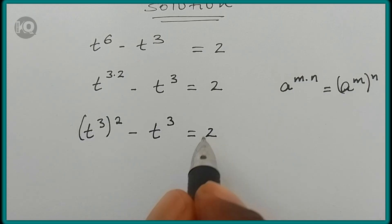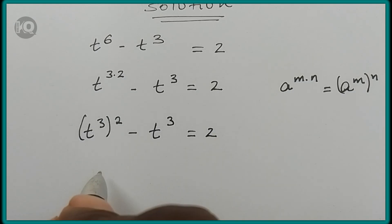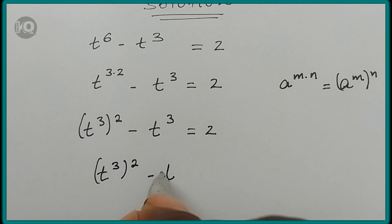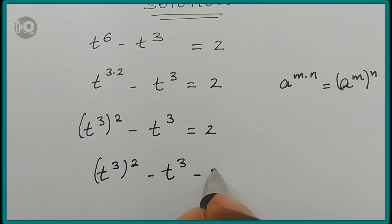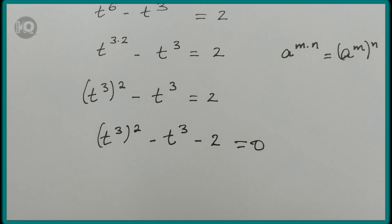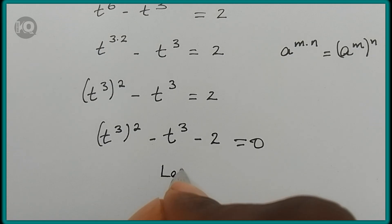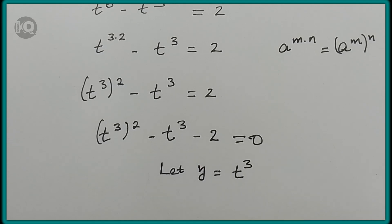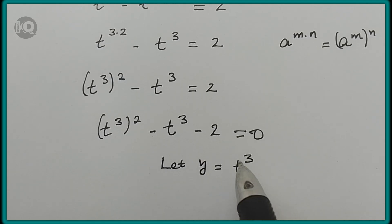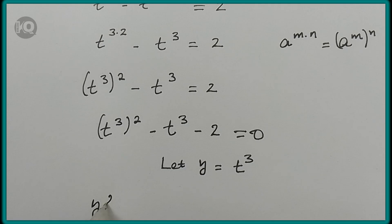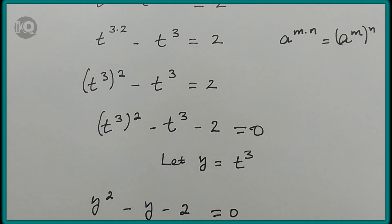Now let's bring the 2 to the left-hand side, giving t to the power of 3, squared, minus t to the power of 3, minus 2, which is equal to 0. Now let's use substitution: let y equal t to the power of 3. Substituting y in place of t to the power of 3, this equation becomes y squared minus y minus 2, which is equal to 0.